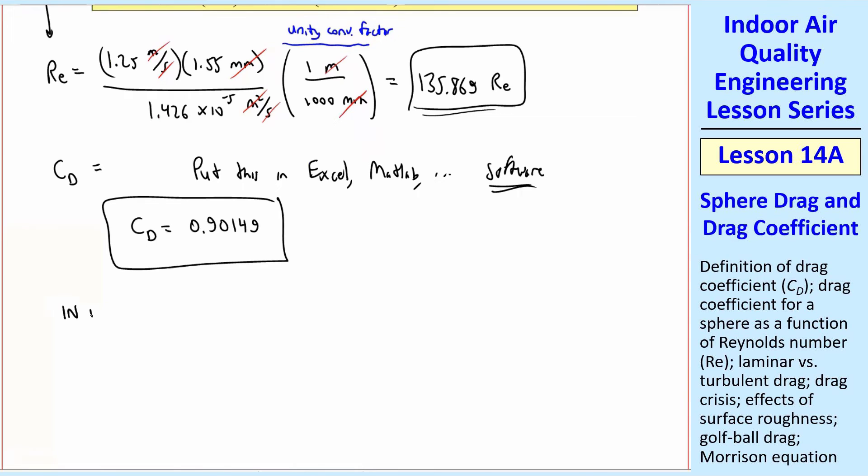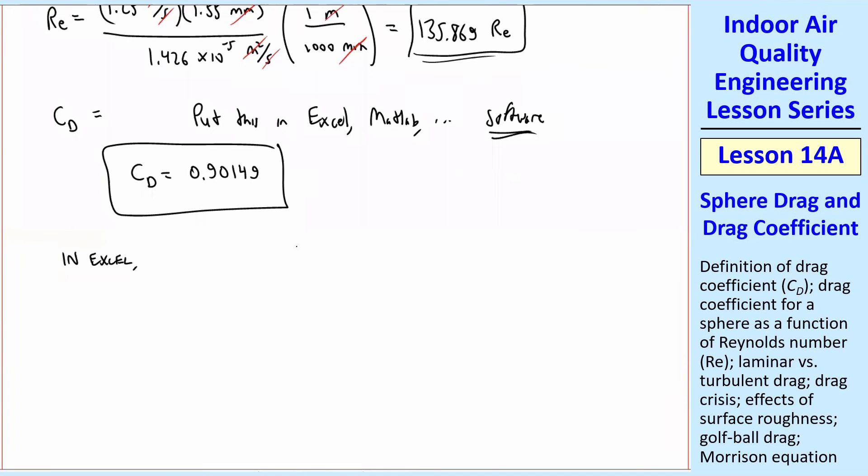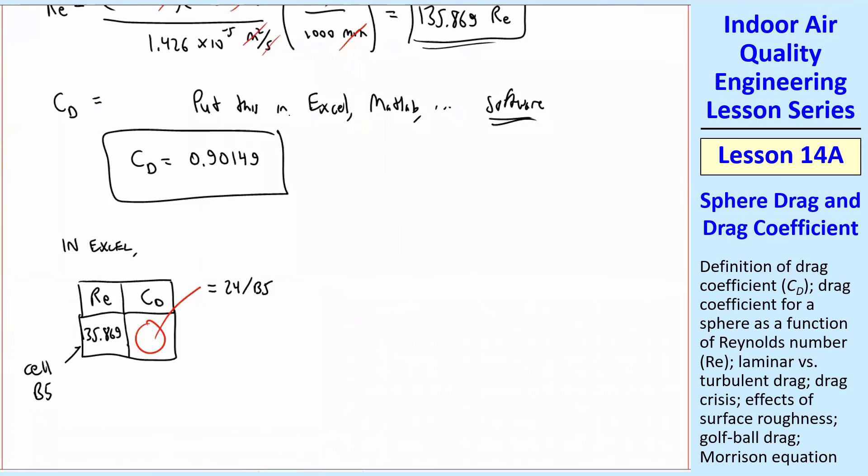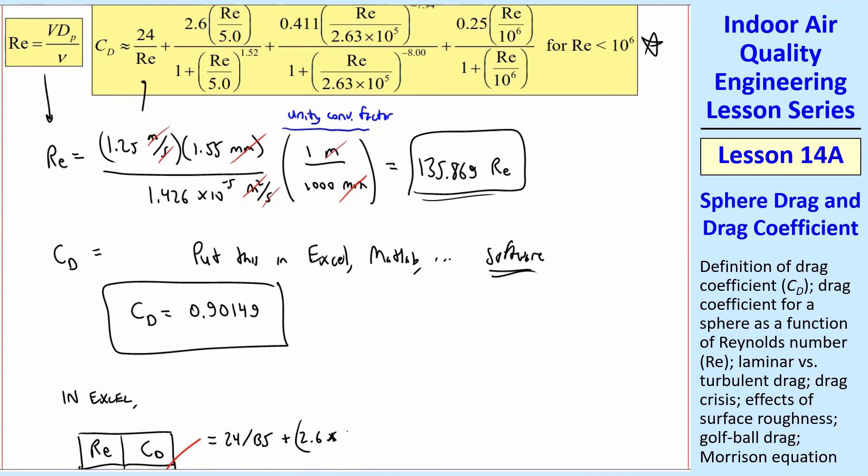I'm going to quickly show you in Excel, which most of you are using. It's very good for these kind of things when you have to do lots of different diameters later. Let's suppose we have a cell for RE and a cell for CD. Suppose that you put in a number. And now I'm going to put this number as 135.869. And let's suppose this is cell number B5. What do I do here? I want to get CD. I'm going to write that out as equals and no if statements here. I'm just going to put 24 divided by Reynolds number. That's B5. So I'm just doing this equation. That's that term. Plus, following that equation.